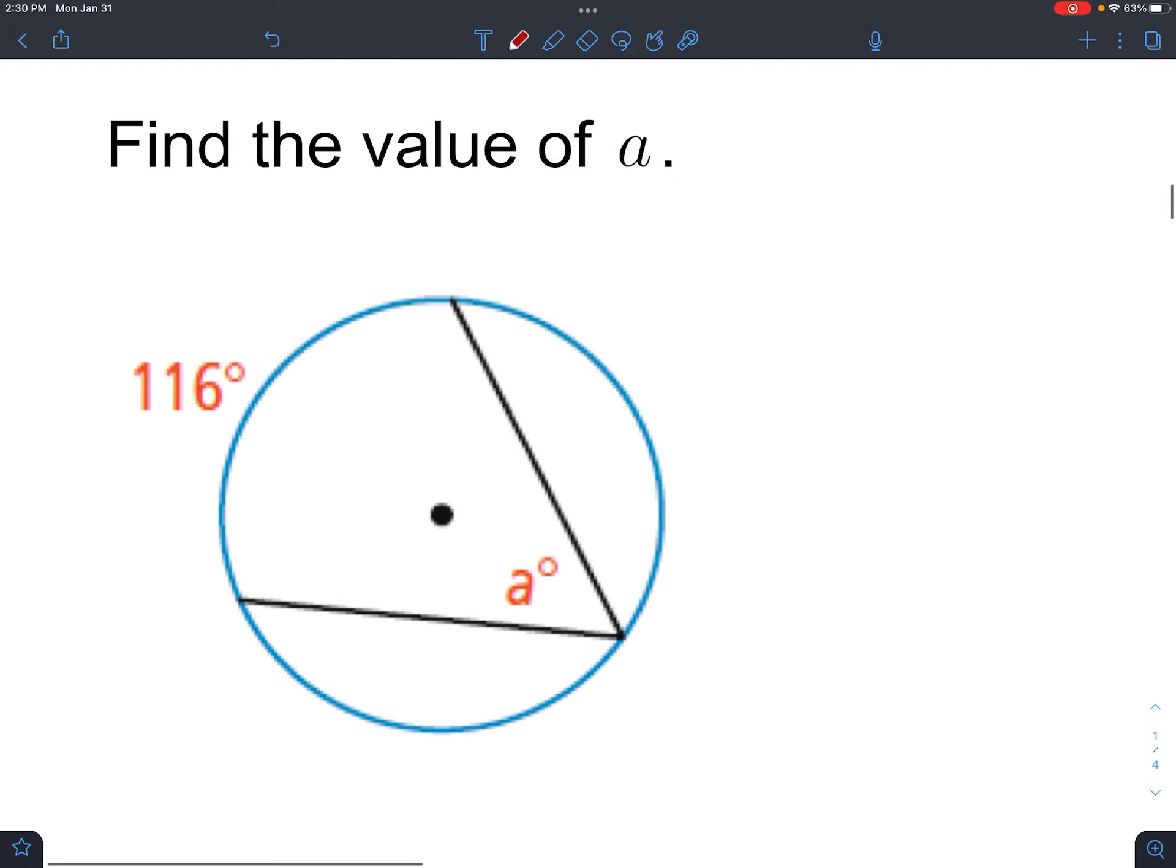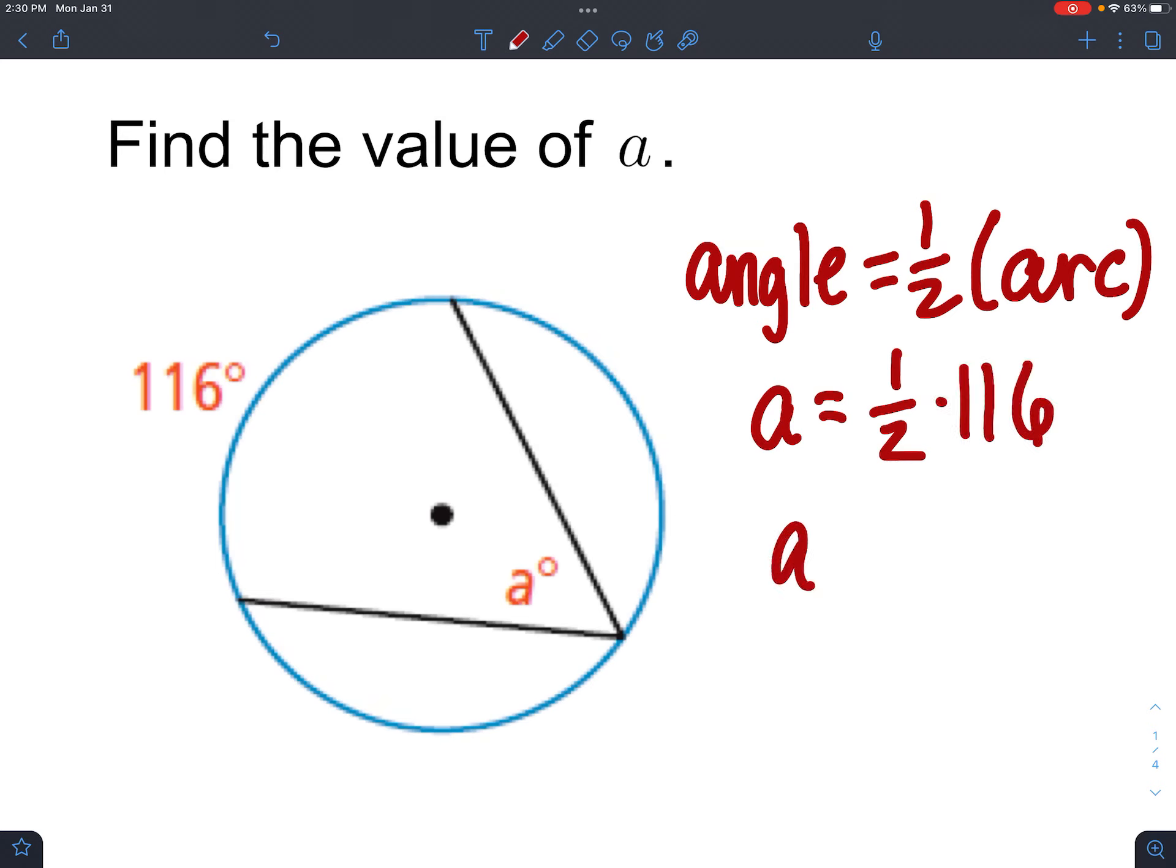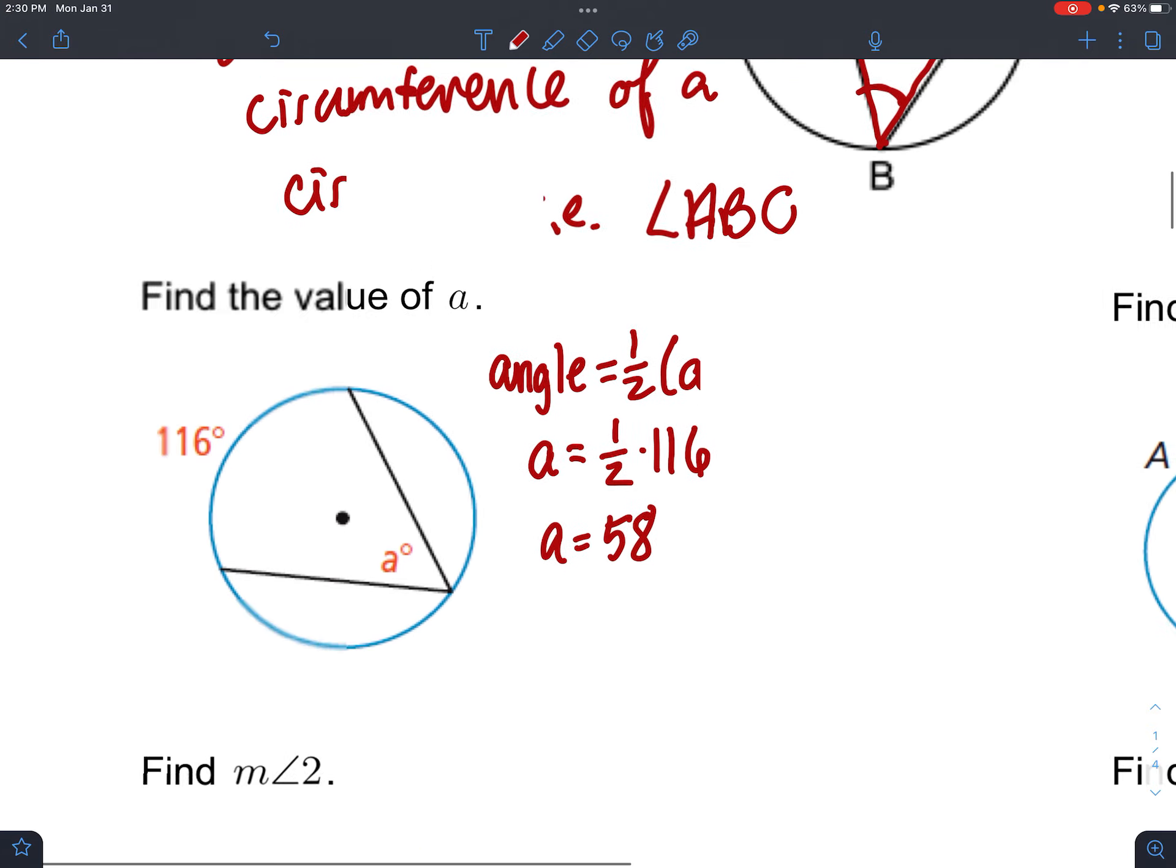So let's work through some examples. This is just a very basic example. The arc is 116. Now, careful, this is only for inscribed angles, so we can't just use this for anything. So the angle is A, and the arc is 116, and that's 58.